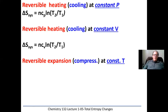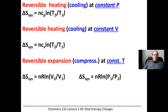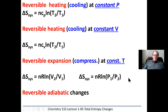For reversible expansions or compressions at constant temperature, we can use these two integrated equations: delta S_system equals nR ln(V2/V1), or delta S equals nR ln(P1/P2) — whichever you use depends on the data given. For reversible adiabatic changes, remember, in an adiabatic change there's no heat exchanged. So Q reversible equals zero, and since delta S depends on Q reversible, delta S will be zero.